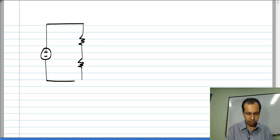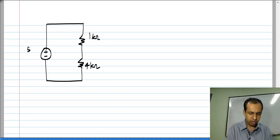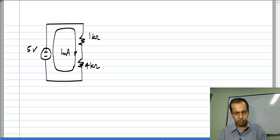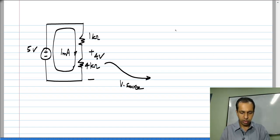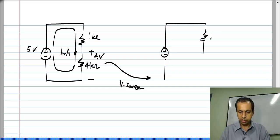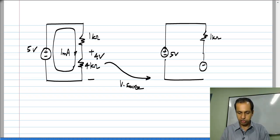Let me show another quick illustration. I will take the same circuit used earlier — 1 kilo-ohm and 4 kilo-ohm across a 5-volt source — and we know that a current of 1 milli-amp flows through it. Now let me choose to substitute the 4 kilo-ohm resistor with a voltage source. The voltage across the 4 kilo-ohm resistor is 4 volts, so I will connect a 4-volt source in its place.